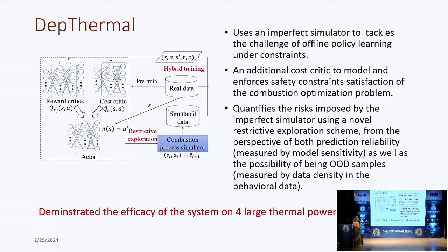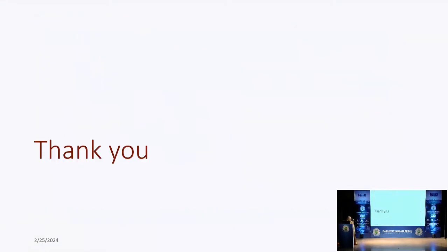They demonstrate in this paper that they used this control on four different large thermal power plants in China and quantified the improvements. In most cases they got a good amount of improvement by using this process. This shows that in the power plant domain, machine learning has been demonstrated to provide a lot of benefits, and there is a lot of potential for using further systems. With this, I will stop. Thank you.